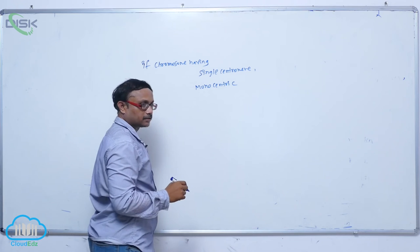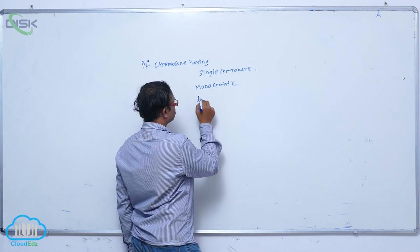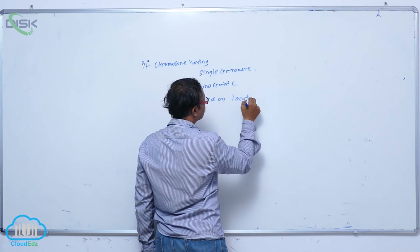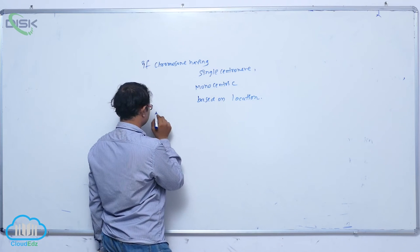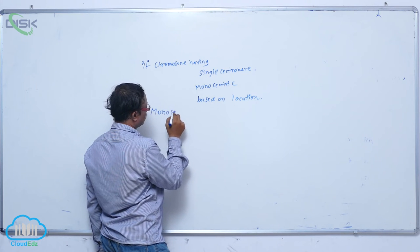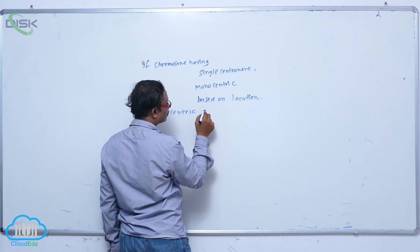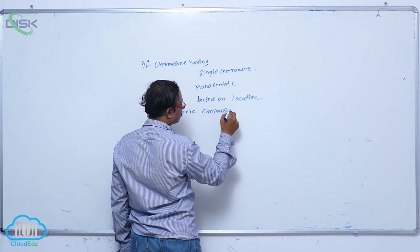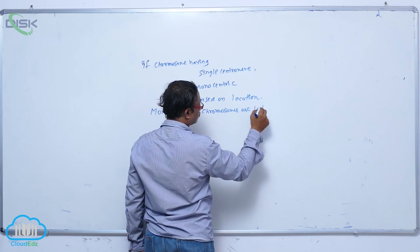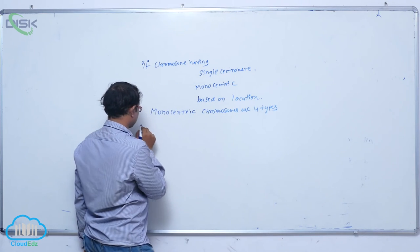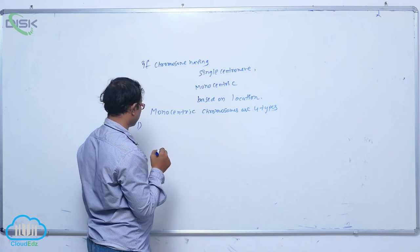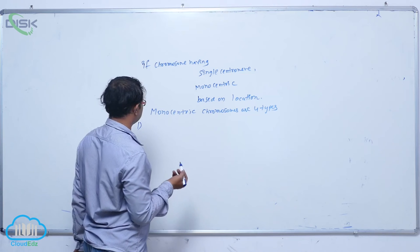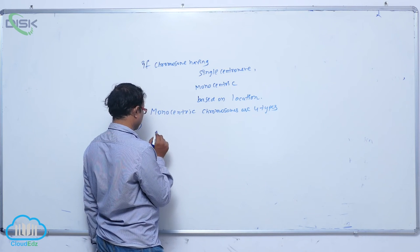Based on the location of the centromere, monocentric chromosomes are of four types: metacentric, sub-metacentric, acrocentric, and telocentric.